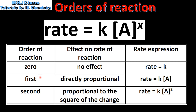If the order of reaction is first order with respect to a particular reactant, then any change in the concentration of that reactant will produce a directly proportional change in the rate of reaction. For example, if we double the concentration of the reactant then we double the rate of reaction; if we triple the concentration then we triple the rate. If the reaction is second order with respect to a particular reactant, any change in the concentration will produce an effect on the rate proportional to the square of the change. For example, if the concentration of the reactant is doubled then the rate of reaction will increase by a factor of 4.